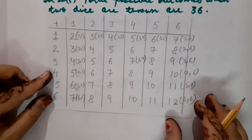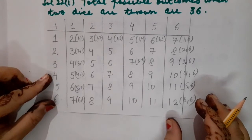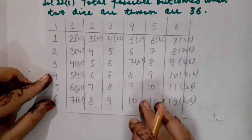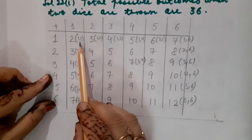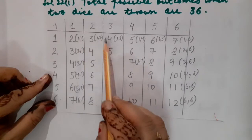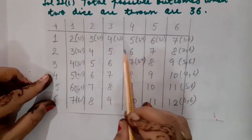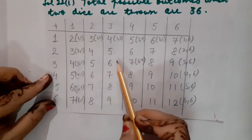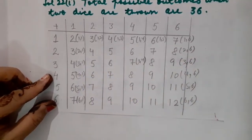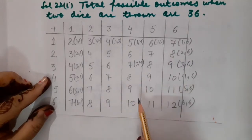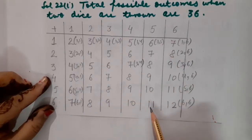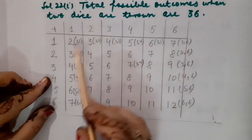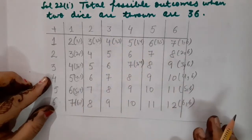Children sometimes ask: is it essential to write down all 36 possible outcomes? The answer is no. You can write a few initial ones like (1,1), (1,2), (1,3), (1,4) and so on, then some middle ones like (3,1), (3,2), (3,3), and then a few of the last row like (6,3), (6,4), (6,5) and (6,6). They total 36 in number.